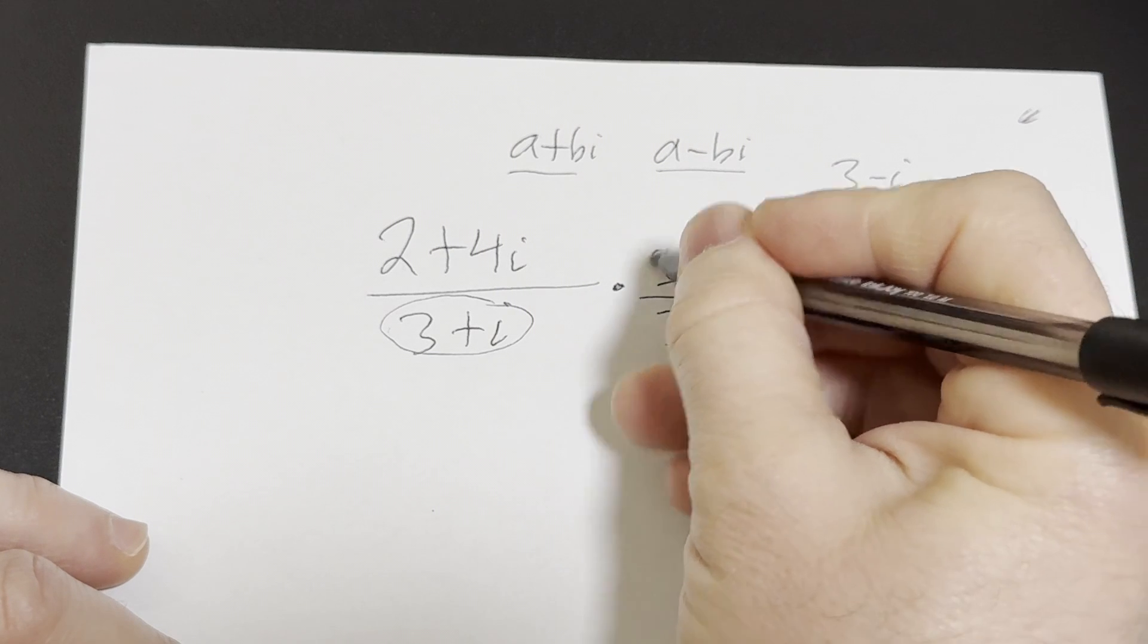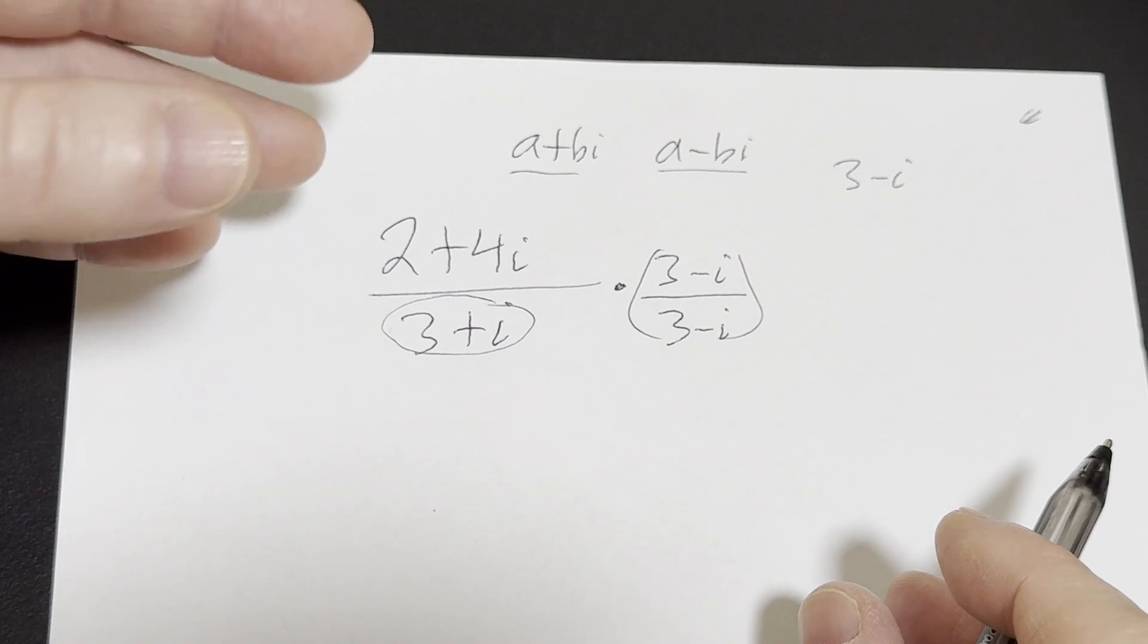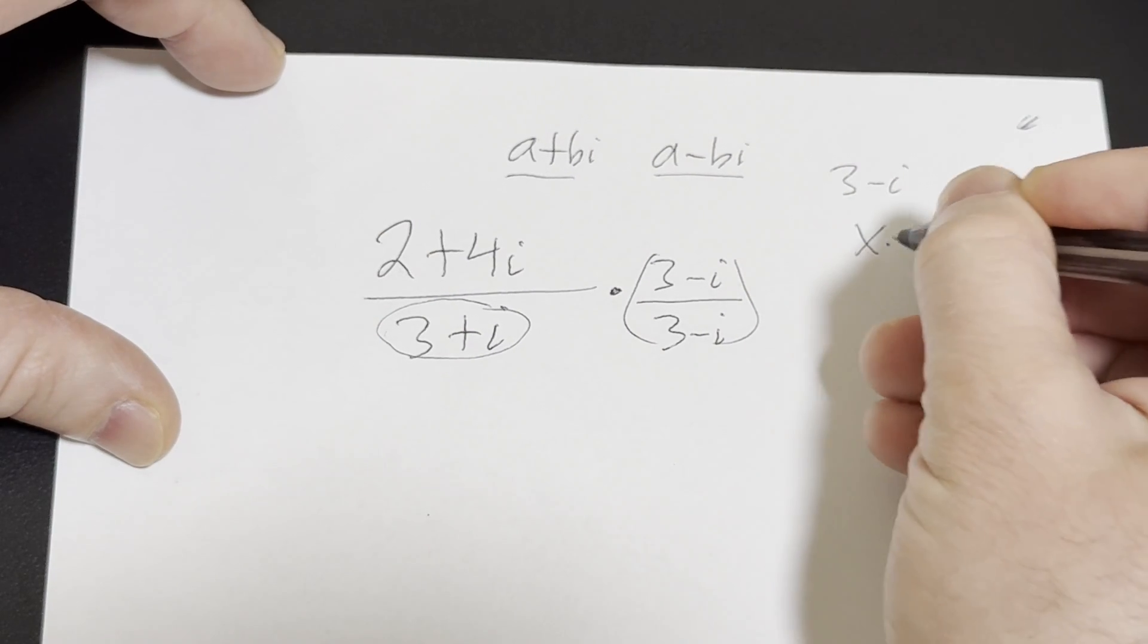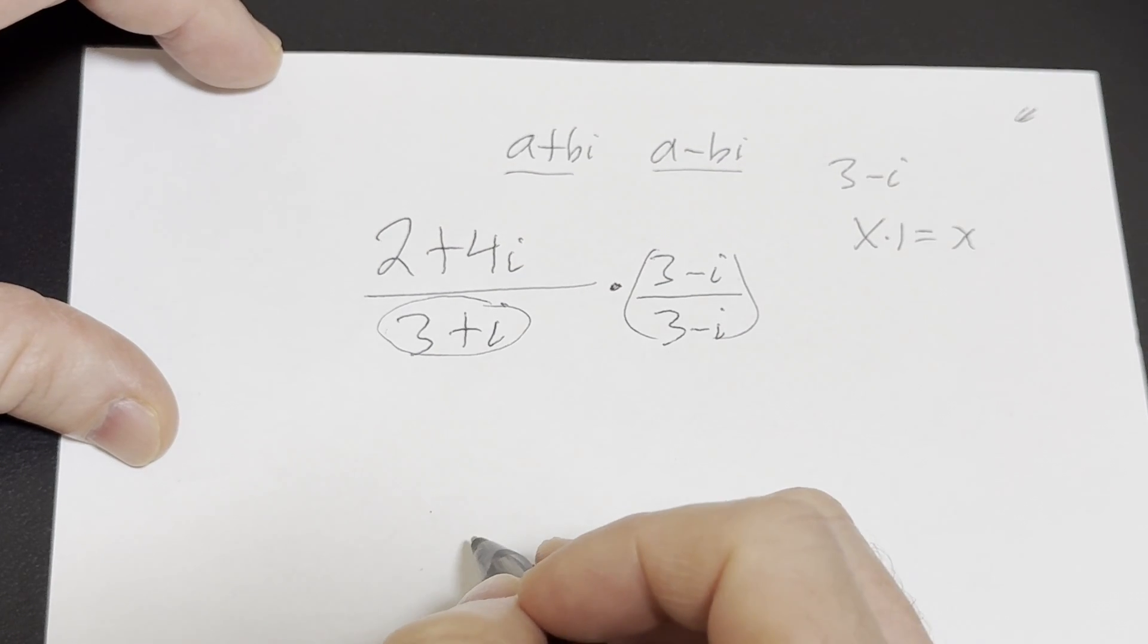And the reason we do this, the reason we multiply by 1 is because we're allowed to do that without changing this expression. You can multiply anything by 1 and you get 1. As a general rule, x times 1 is equal to x. So in this case we're multiplying by 1, nothing is changing.